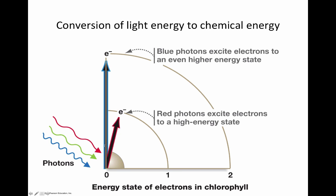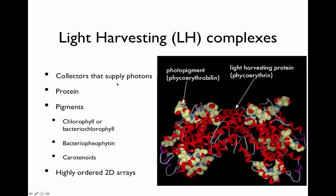Blue light has more energy and will boost the electron higher to a higher energy state than red light. Let's look at a light harvesting complex. These are the complexes that supply photons to the reaction center. They're made of protein and pigments. The pigments will be chlorophyll or bacterial chlorophyll, bacterial pheophytin — which is basically chlorophyll without the magnesium — and carotenoids.